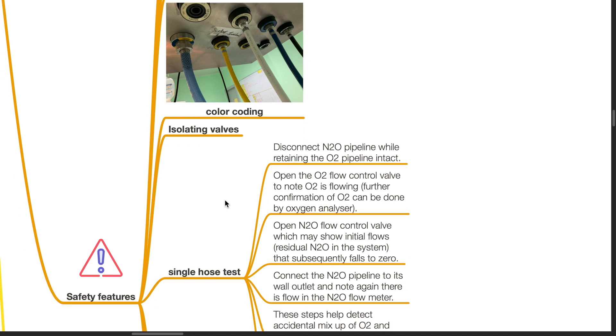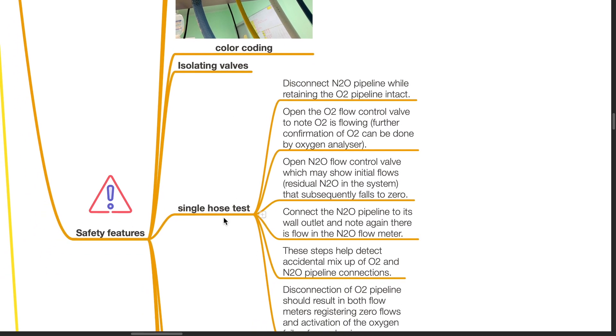The single hose test: Disconnect the nitrous oxide pipeline while retaining the oxygen pipeline. Open the oxygen flow control valve to note that oxygen is flowing. Further confirmation of oxygen can be done via oxygen analyzer. Open the nitrous oxide flow control valve which may show initial flows due to the residual nitrous oxide in the system.